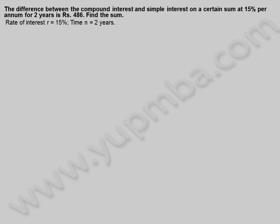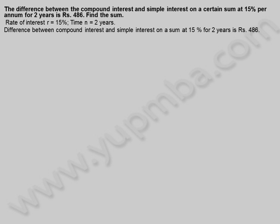The difference between the compound interest and simple interest on a certain sum at 15% per annum for 2 years is 486 rupees. Find the sum. Rate of interest R is equal to 15%, time N is equal to 2 years.